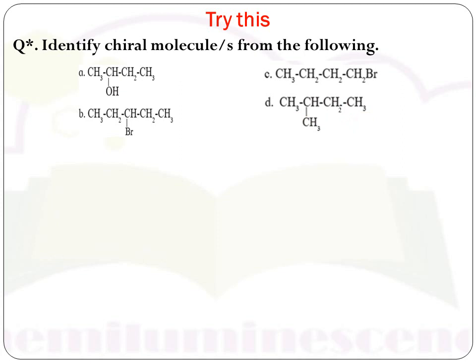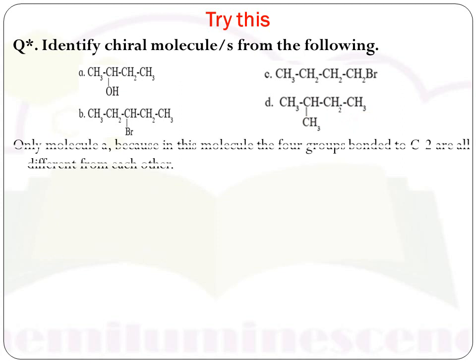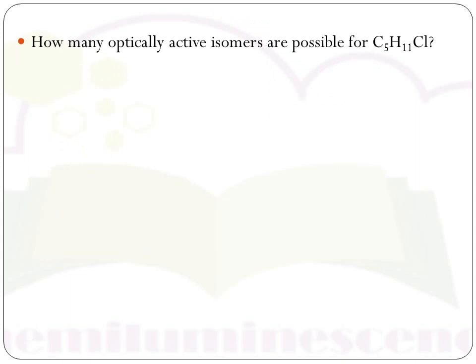Only molecule A is a chiral molecule because all four groups bonded to its carbon atom are different — making it a chiral carbon. If a chiral carbon is present in a molecule, it is called a chiral molecule. Chiral molecules can have enantiomers and because of that they are optically active. Remember this.